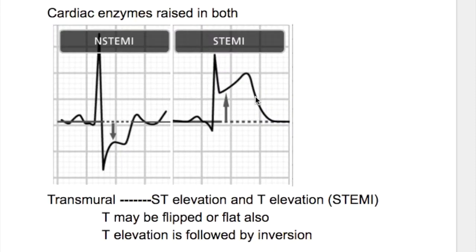In this video we will compare four disorders: transmural infarct, subendocardial infarct, unstable angina, and Prinzmetal angina. In two of them cardiac enzymes are raised, in two of them there is ST elevation, and in two of them there is ST depression.